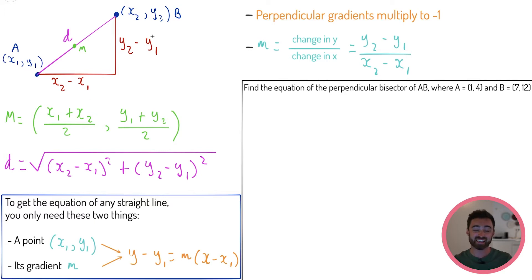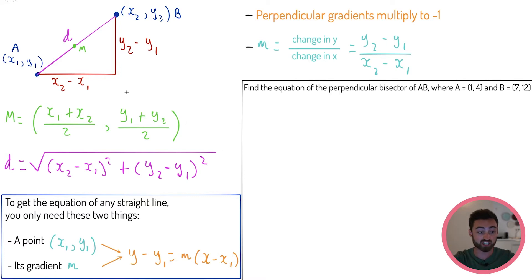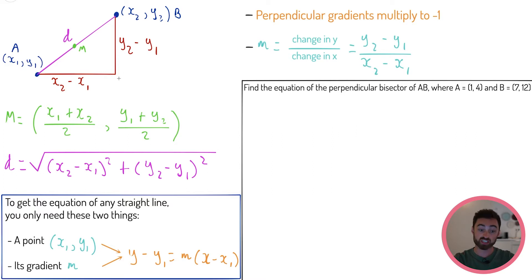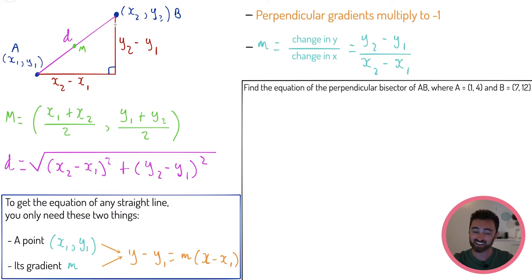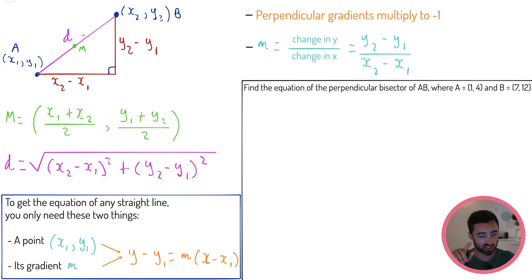The next thing is finding the distance between the two points — the actual length of the line. We can be cheeky and draw a triangle using the difference between the x coordinates and the difference between the y coordinates. That gives us a right-angle triangle, so we can use Pythagoras. The distance is the square root of (x2 − x1)² + (y2 − y1)².